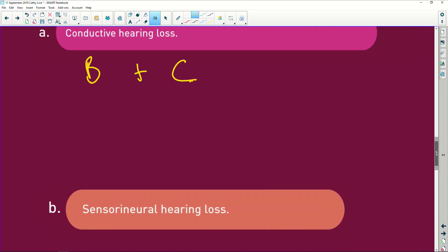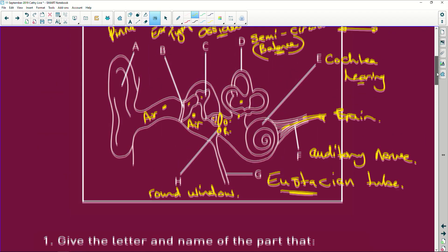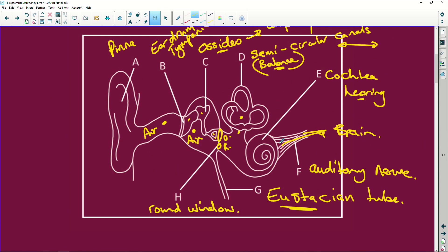Then, sensory neural hearing loss. So, that's going to be the impulses not being converted or not getting to the brain. So, that's going to be E, which is the cochlea. The cochlea isn't working. Not going to convert the sound waves into impulses and the auditory nerves. So, it's E and F.